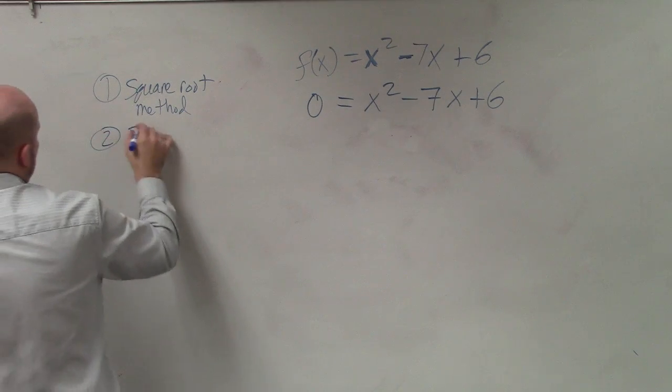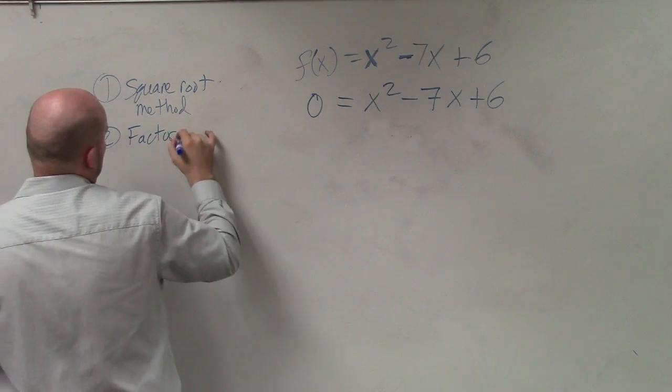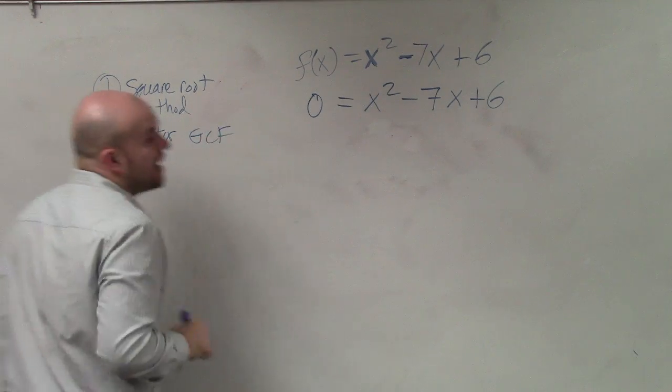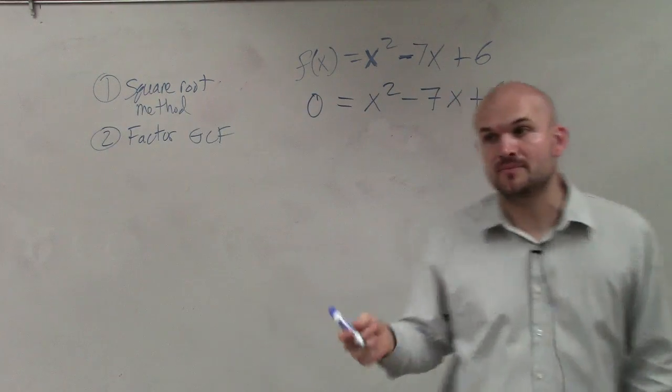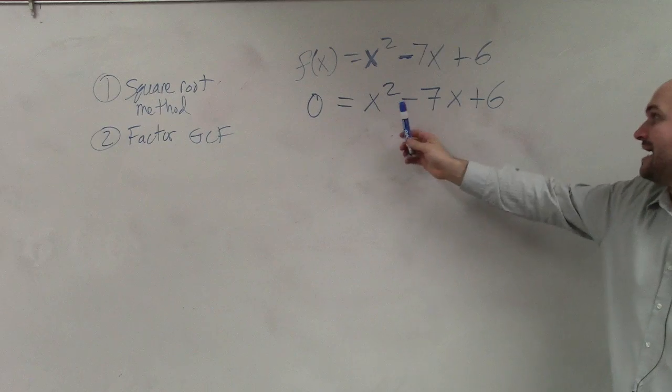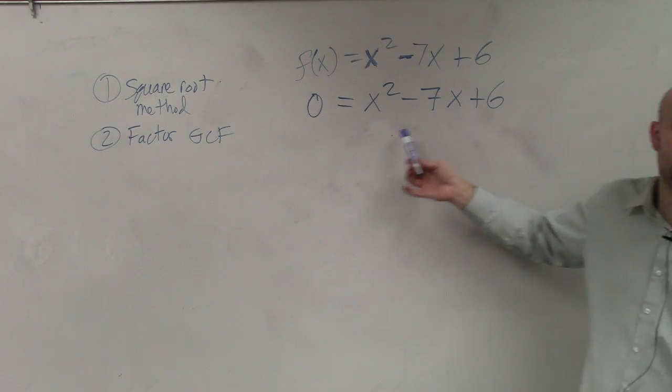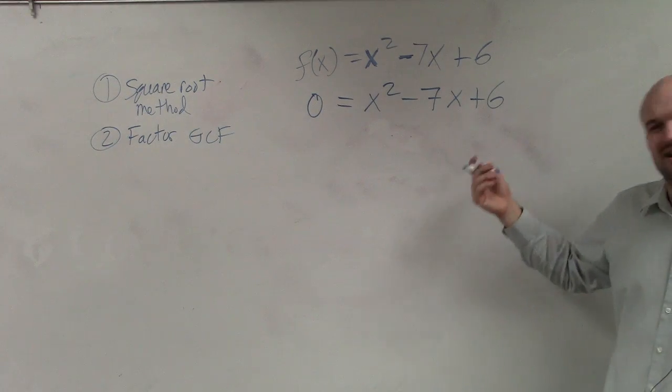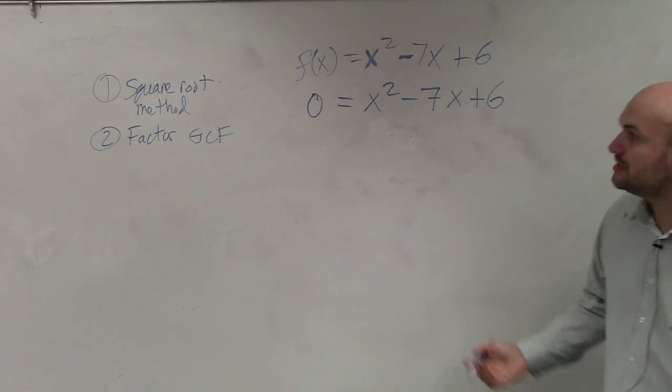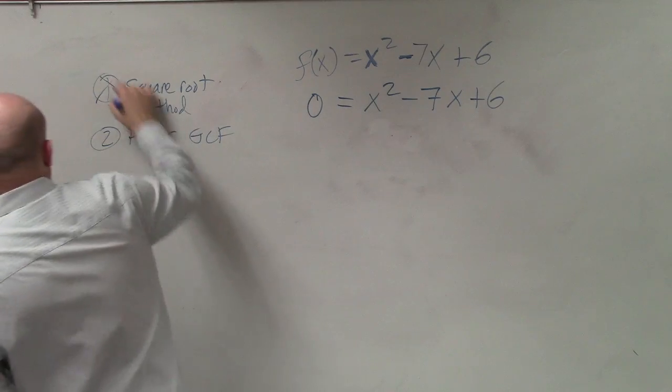The next one was we used factoring our GCF. Now, GCF, they all had to share a term. Do all of these share an x? No, they don't. Do they all share a common number? Well, except for 1, right? But factoring out 1 is not going to help us. So we can't use factoring out the GCF.